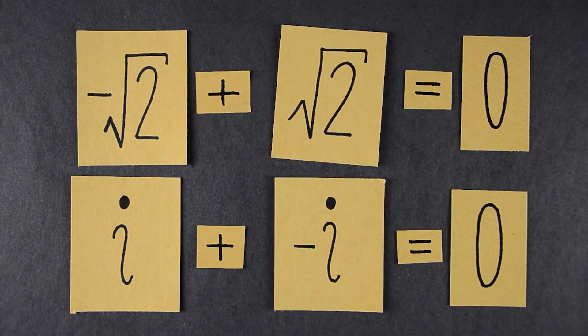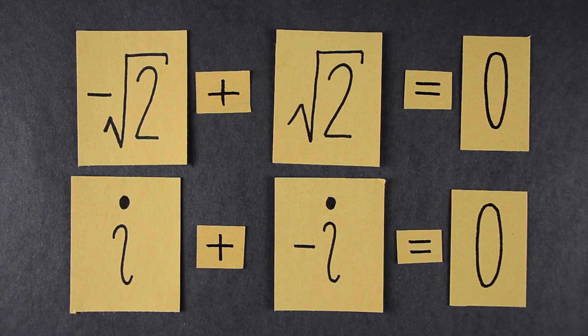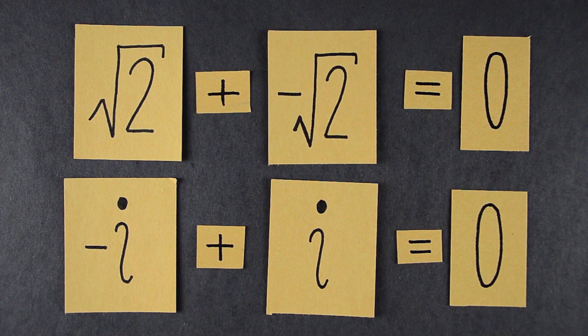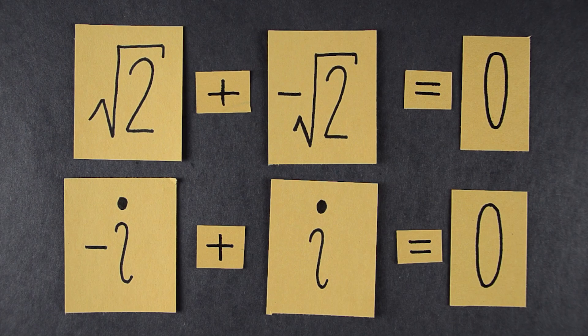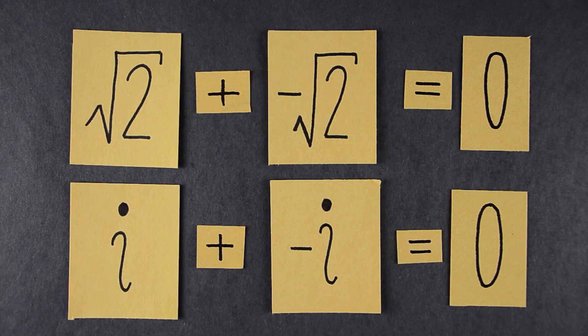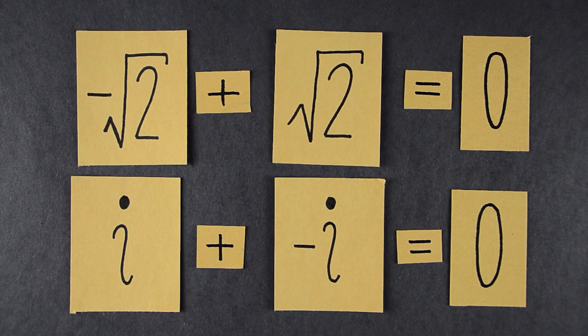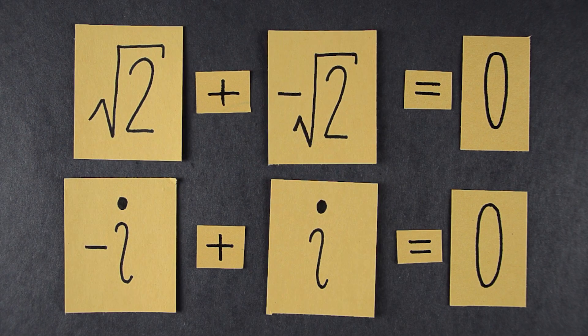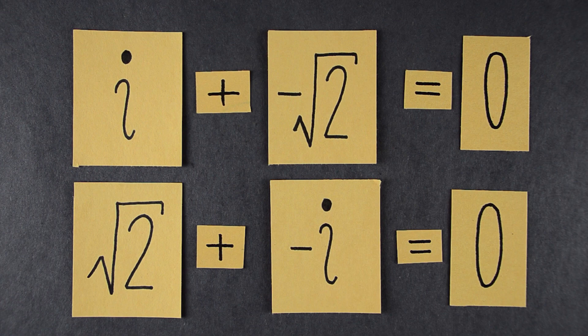If we swap i with negative i, the equations also hold. But if we swap root 2 and i, they don't hold anymore. The first two cases were a symmetry of the equations. The third case was not a symmetry because the equations didn't hold anymore.